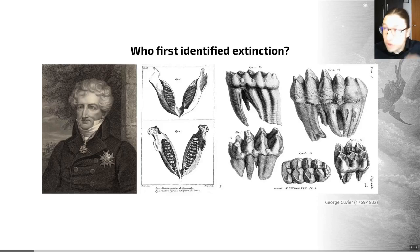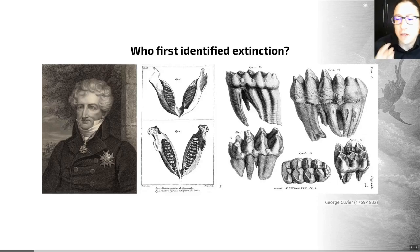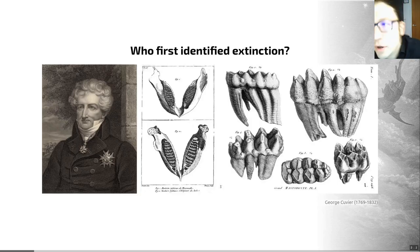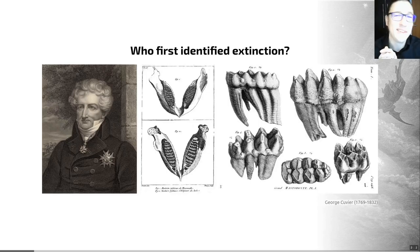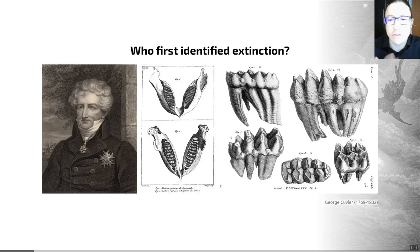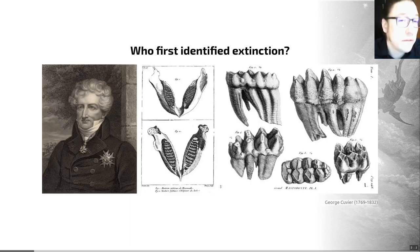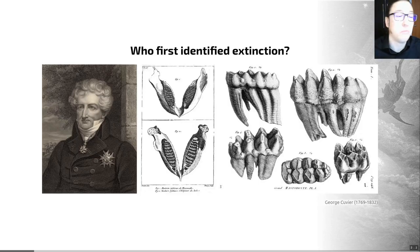It's worth noting that Cuvier suggested extinctions could be due to periodic catastrophic floods. He was a key proponent of an idea called catastrophism, as opposed to uniformitarianism. That's the idea of periodic catastrophes on a scale we don't recognise today. We now think that uniformitarianism is the norm. Though he was right in some ways and wrong in others — as we all are.